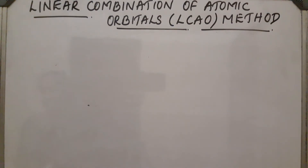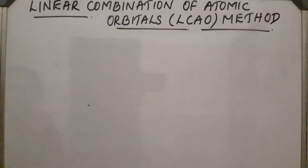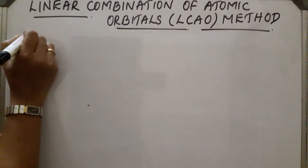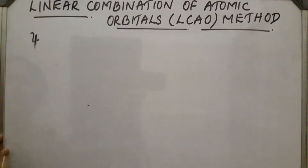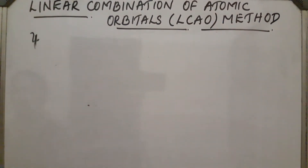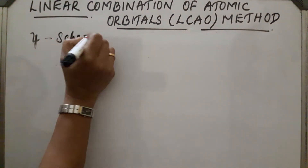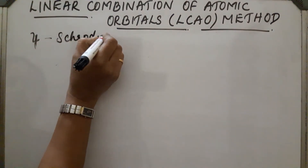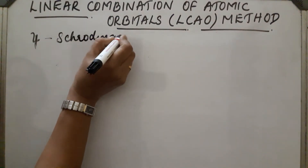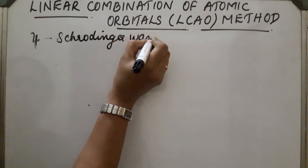In wave mechanics, atomic orbitals are expressed by the wave function psi, and these are obtained from the solutions of the Schrödinger wave equation.